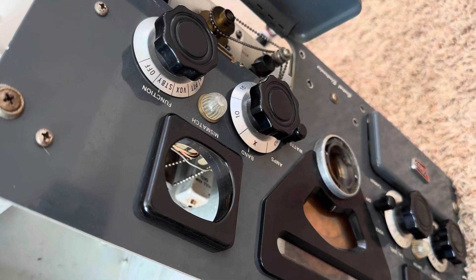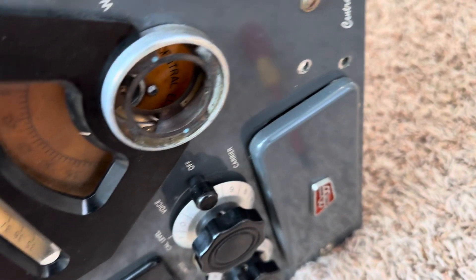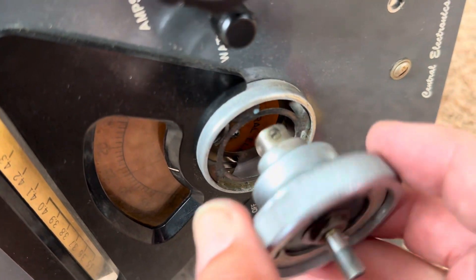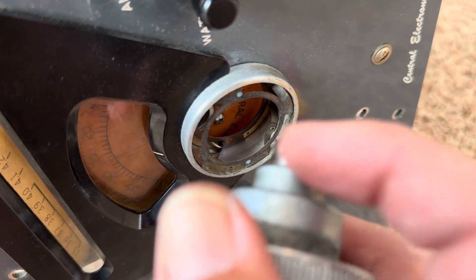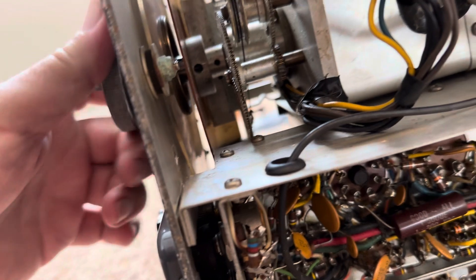I'll go over the steps to remove the VFO quickly. First, you want to get the front knob assembly out. The front knob assembly is held by two set screws which you access through this panel here. Take out those two set screws, get them loosened up, and this comes off.